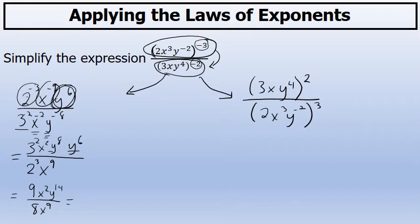There are two factors of x in the denominator and nine factors of x in the denominator. I can subtract those exponents and write it as x to the seventh power in the denominator, because nine minus two is seven.